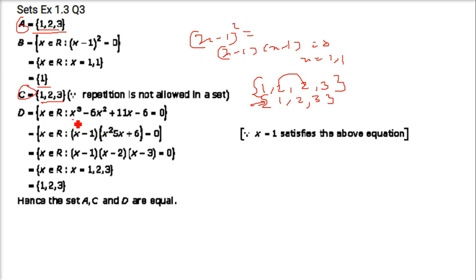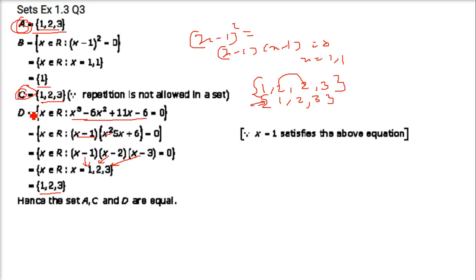Set D: x³ − 6x² + 11x − 6 = 0 factorises as (x−1)(x−2)(x−3) = 0, giving x = 1, 2, 3. So D = {1, 2, 3}. Therefore A, C, and D are all equal.